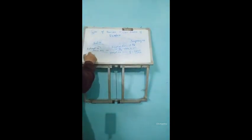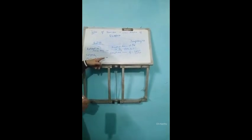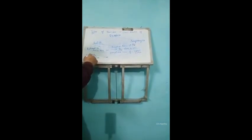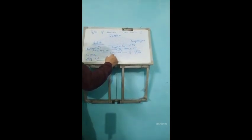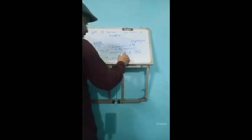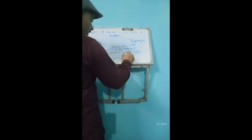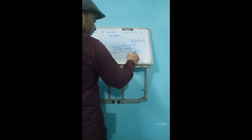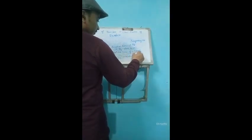And integers are further classified as positive integer, negative integer, and zero. Now zero integer and positive integer together form whole number, and positive integers give us natural number.